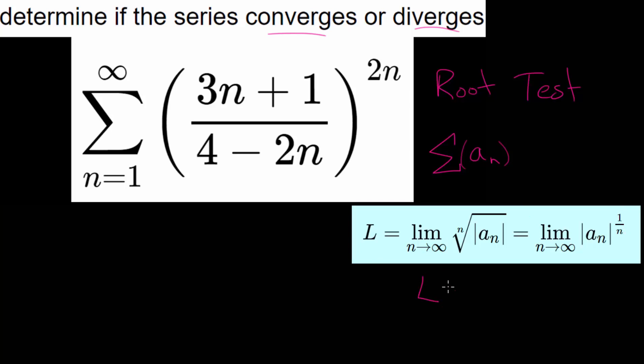If this limit, L, is less than 1, then we can say that it converges. If L is greater than 1, then we can say that it diverges. But if L is equal to 1, basically it doesn't give us any useful information. So this test will really only work if we get an L value that's less than 1 or bigger than 1.